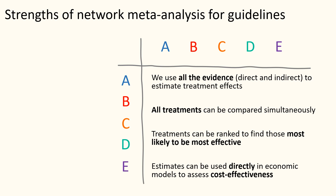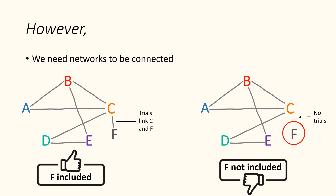We have seen that network meta-analysis uses all of the evidence — direct and indirect — to compare the treatments for an outcome. All treatments can be compared together and treatments can be ranked to find those most likely to be effective. Network meta-analysis also gives us estimates that can be used in economic models so that the cost-effectiveness of the treatments can be compared. However, they are not a magic bullet. We can't estimate effects for treatments that are not connected to the network — here, treatment F cannot be compared with the other treatments in the network on the right.